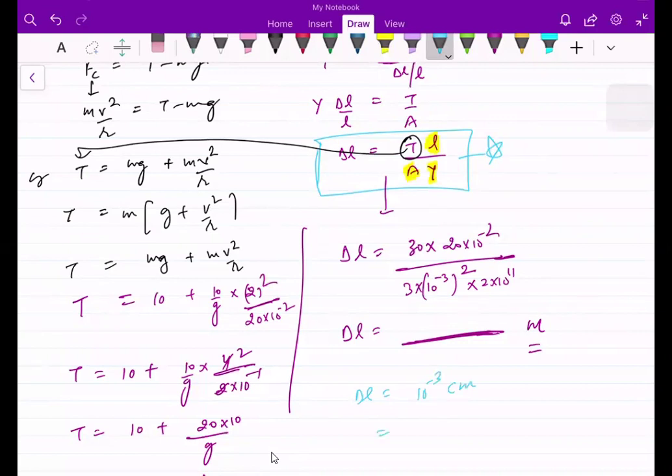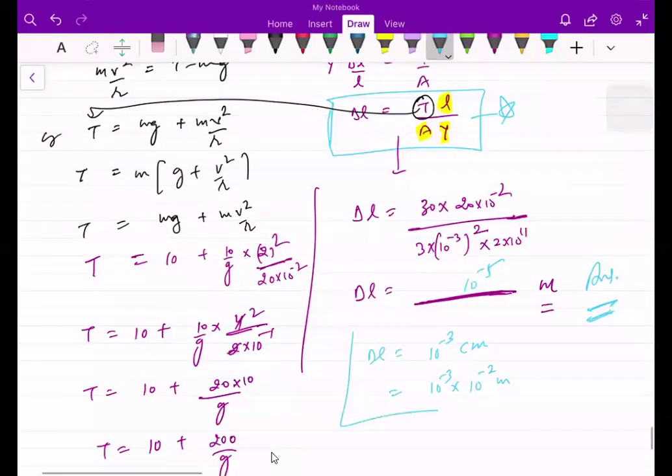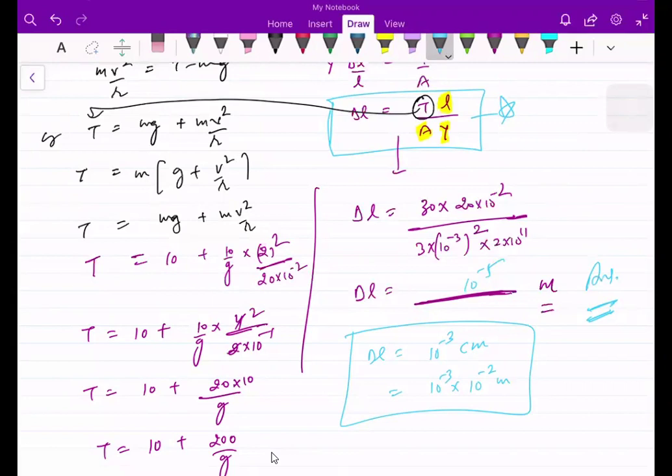For this, 10 to the minus 3 cm will be equivalent to 10 to the minus 5 meter.